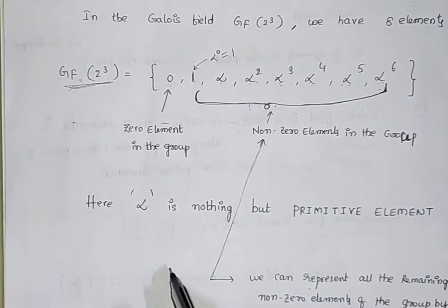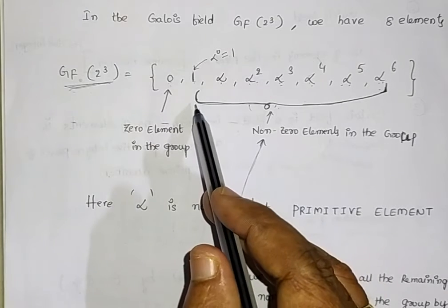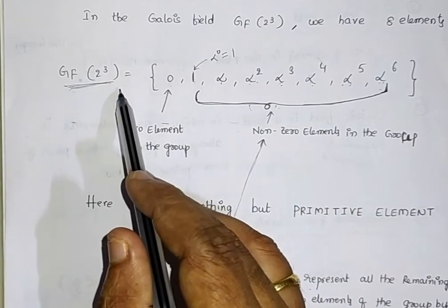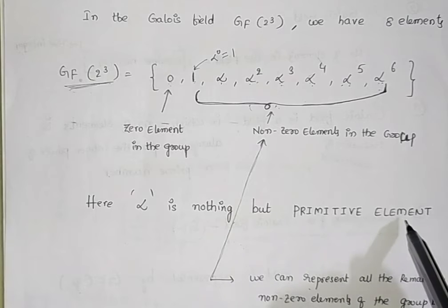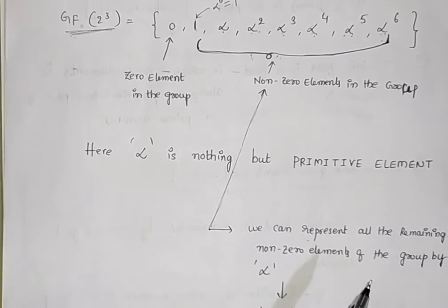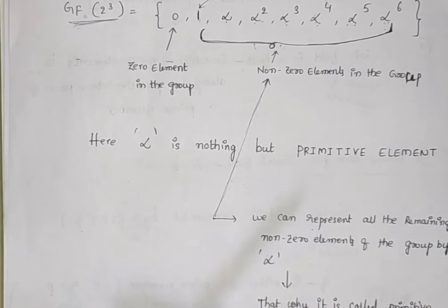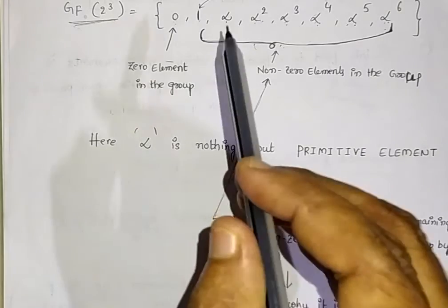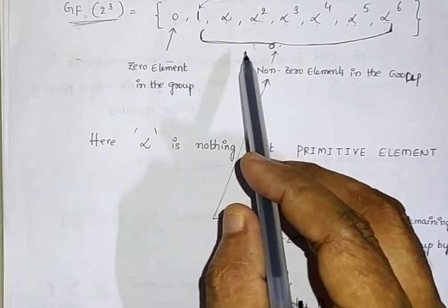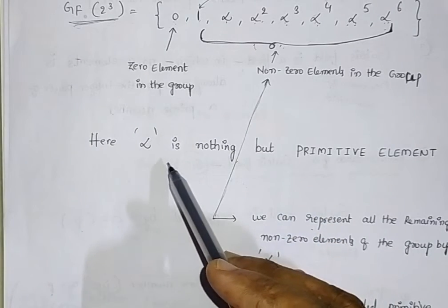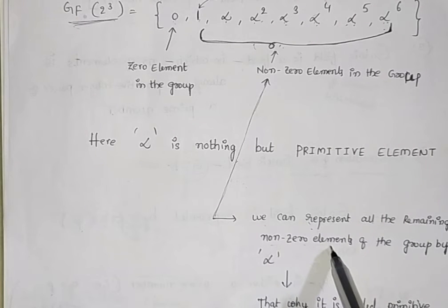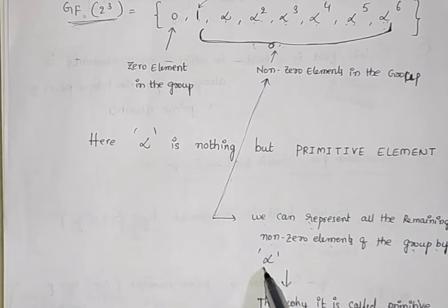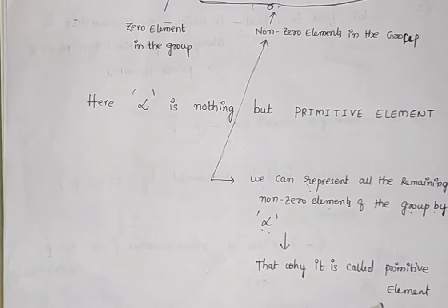Out of these 8 elements, there is 1 zero element and 7 non-zero elements. These 7 non-zero elements are represented by the common letter alpha. In the Galois field, this common letter used to represent all non-zero elements is called the primitive element. Since alpha represents all non-zero elements within the field, alpha is called a primitive element.